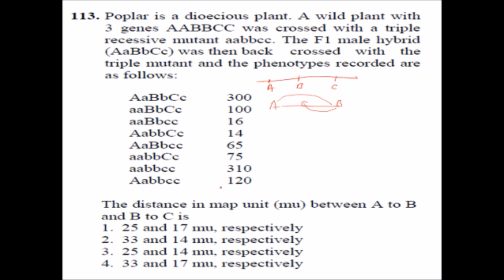Of the 1,000 progeny, the highest values — 300 and 310 — are the parental type. The lowest values — 16 and 14 — represent the double crossover, while the rest are single crossovers, either between a and b, or between b and c.